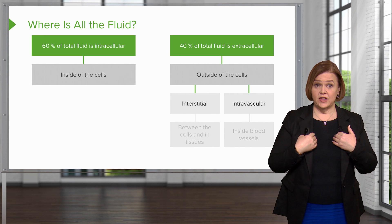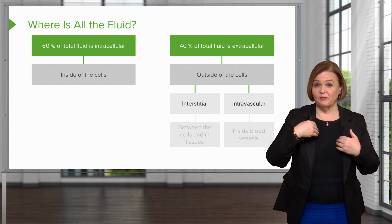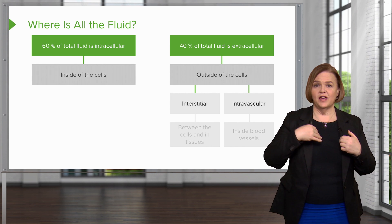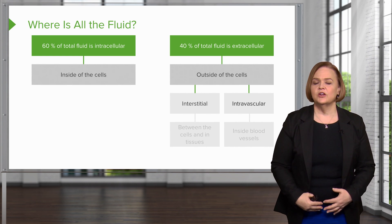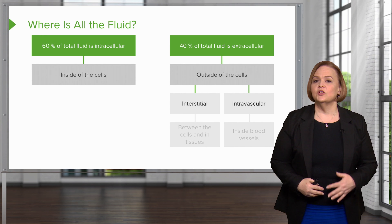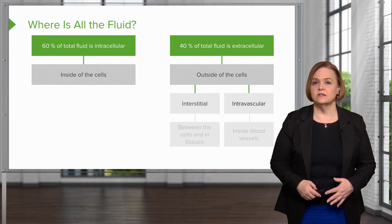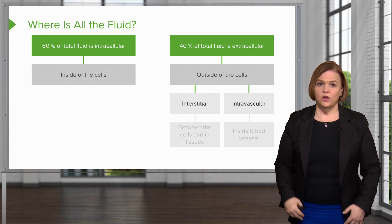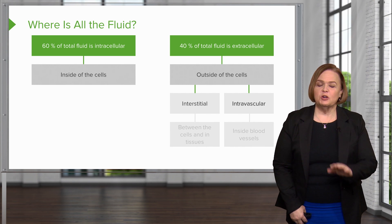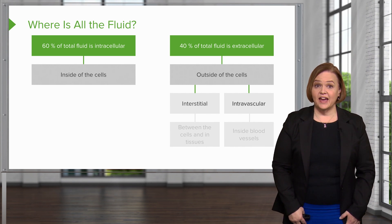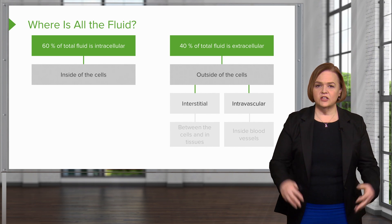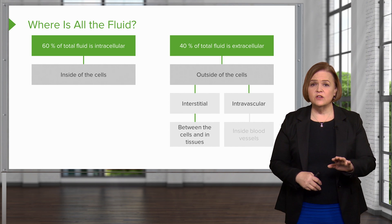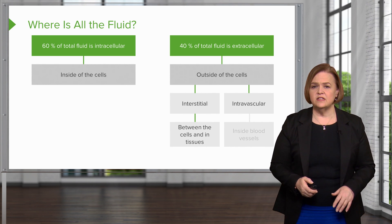Intravascular is in my vessels. I'm supposed to stay an intact system from my right atrium, going all the way through, back up, and back to my right atrium — that should be a closed system. That's considered your intravascular space. Inside the cell, outside the cell — it's going to matter when we hang IV fluids because it's going to cause fluid to shift back and forth between those spaces.